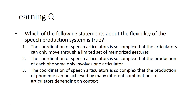The second statement says that the coordination of speech articulators is so complex that each phoneme only involves one articulator. We have more complicated things going on than that—our speech sounds aren't distilled down to just one articulator. We have a particular articulatory goal we want to meet, but whether that goal is met by the jaw, lower lip, or tongue depends on context. So the correct third answer is: phoneme production can be achieved by many different combinations of articulators, and exactly how depends on the context at the time.